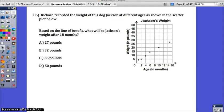Number 85. Richard recorded the weight of this dog, Jackson, at different ages, as shown in the scatter plot below. Based on the line of best fit, what will Jackson's weight be after 18 months?